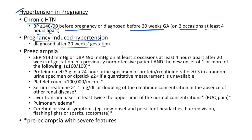Preeclampsia is systolic BP ≥140 mmHg or diastolic BP ≥90 mmHg on at least two occasions at least 4 hours apart after 20 weeks gestation in a previously normotensive patient — that is, PIH plus new onset of one or more of: proteinuria ≥0.3 g in 24-hour urine, or PCR ≥0.3 in random urine, or dipstick ≥2+ if quantitative measurement is unavailable.